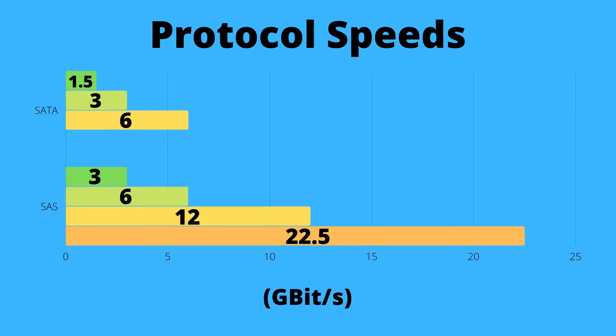These are the protocol speeds for the two interfaces. For SATA we have generations 1, 2, and 3 with 1.5, 3, and 6 gigabits per second respectively. For SAS it has generations 1 through 4 with 3, 6, 12, and 12.5 gigabits per second respectively. So you can really see where SAS significantly outperforms SATA.